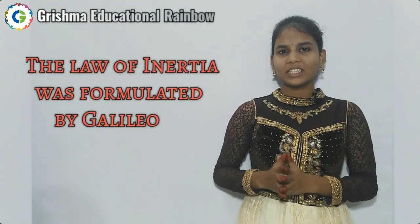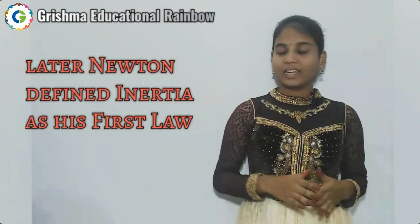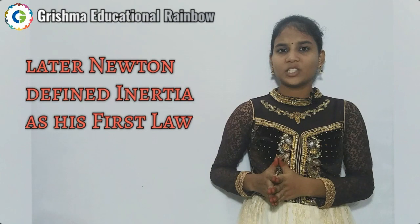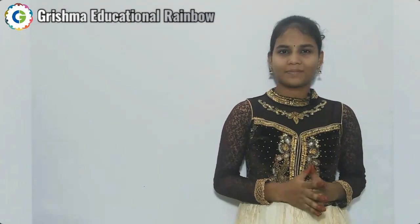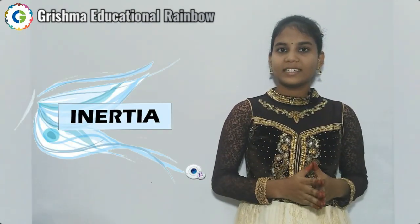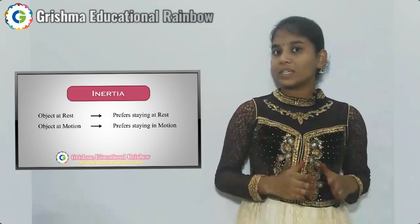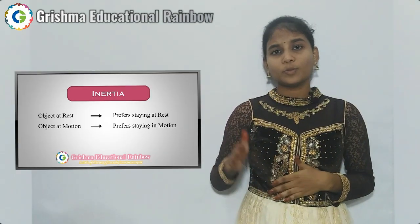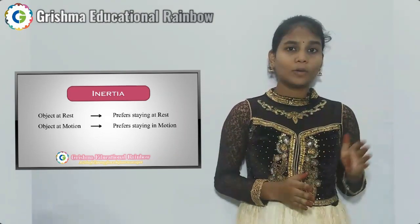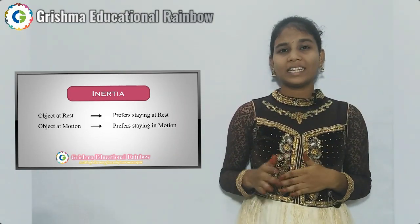The law of inertia was first formulated by Galileo. Later, Isaac Newton defined inertia as his first law. Inertia is the natural tendency of an object to resist change in its state of motion. This means every object in a state of rest or in motion always tends to remain in its current position — if an object is at rest it prefers to stay at rest, and if in motion it tends to stay in motion.